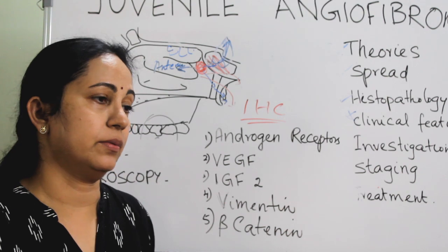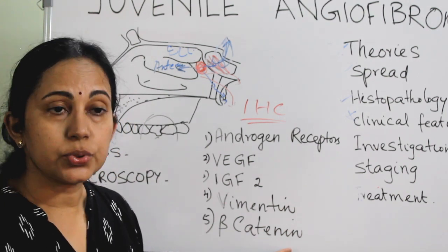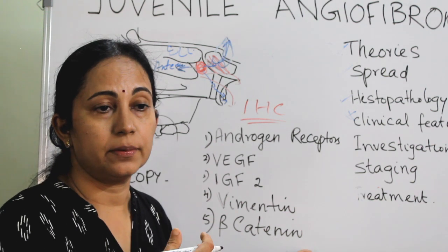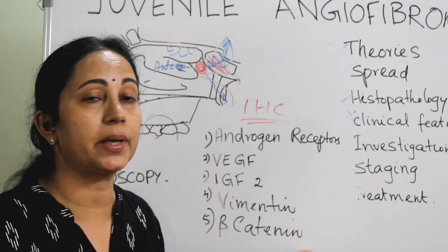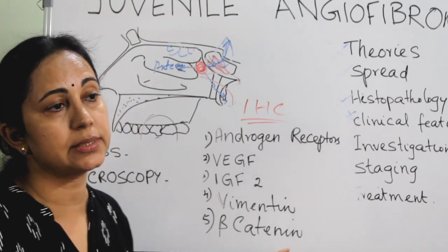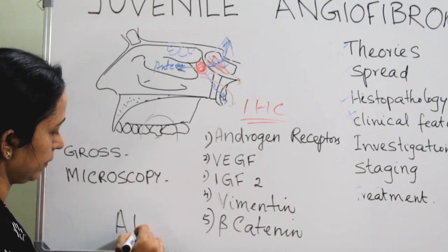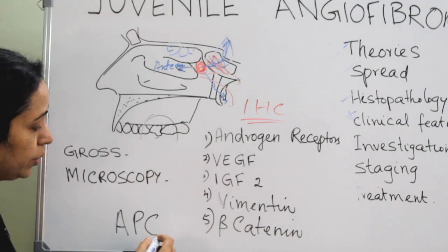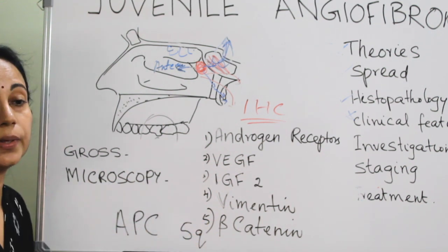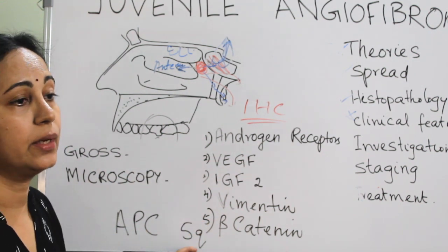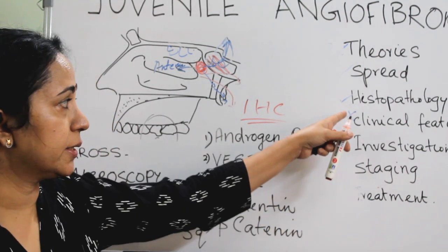JNA is more commonly seen in patients with familial adenomatous polyposis. The adenomatous polyposis coli (APC) gene on chromosome 5Q has also been found to be associated with JNA.